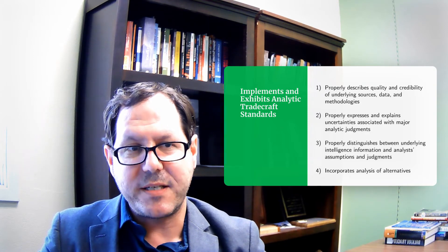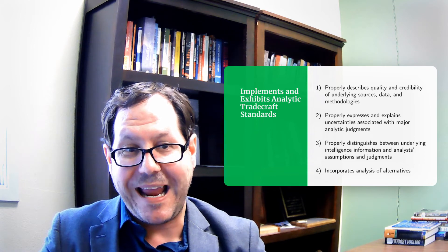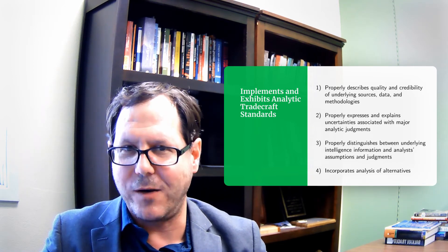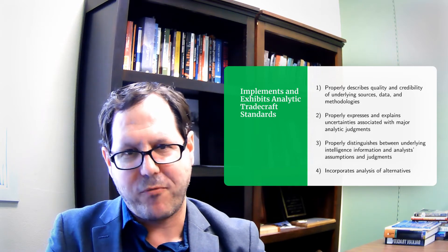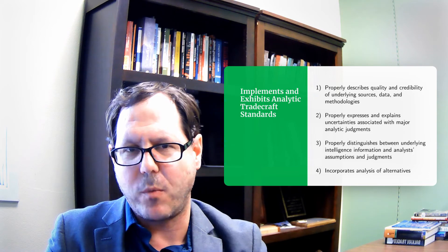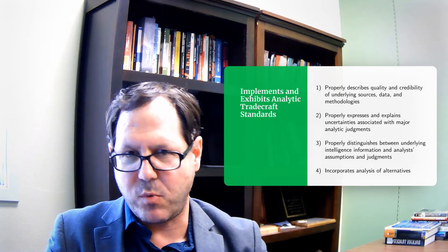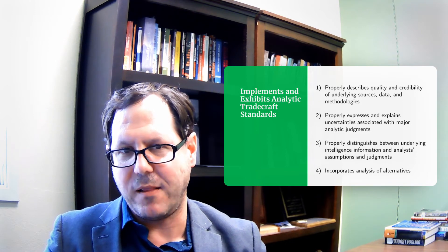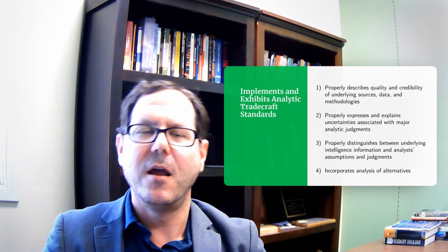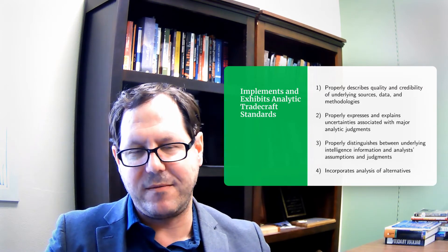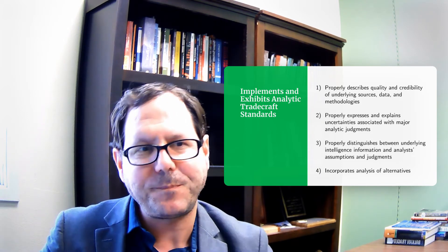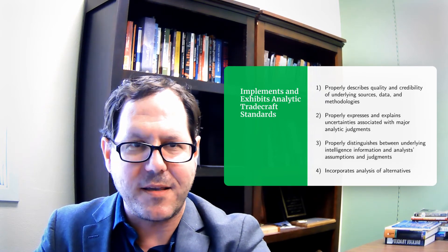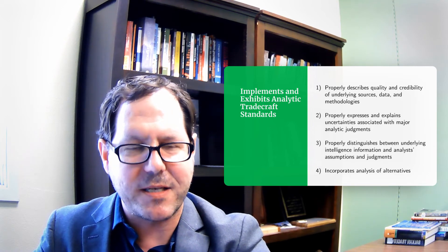Third, properly distinguish between underlying intelligence information and an analyst's assumptions and judgments. Since we're often working with incomplete information and significant uncertainty, we have to work through that using our own assumptions, models, and judgments — and that should be made clear to policymakers, separating out what information is solid versus how we put that information together to form a judgment and what assumptions are involved. Fourth, incorporate analysis of alternatives. There are a variety of ways this can be done, but it's pinging that analysis of competing hypotheses will be a favored method under these new standards.